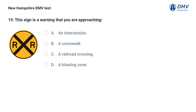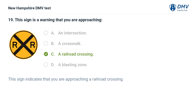This sign is a warning that you are approaching: A) an intersection, B) a crosswalk, C) a railroad crossing, D) a blasting zone. The answer is C, a railroad crossing. This sign indicates that you are approaching a railroad crossing.